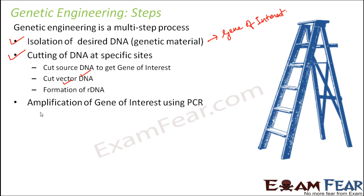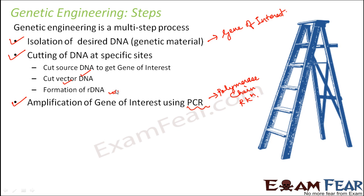Once that is done, the next step is amplification of the gene of interest using PCR — polymerase chain reaction. Till this step we have discussed how recombinant DNA is formed. The next step is introducing recombinant DNA into the host cell, but before that it is very important that the gene of interest is amplified.